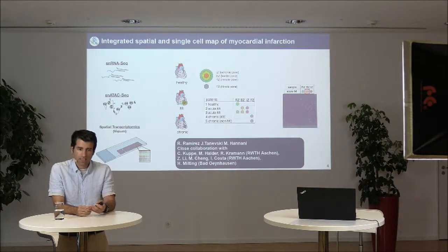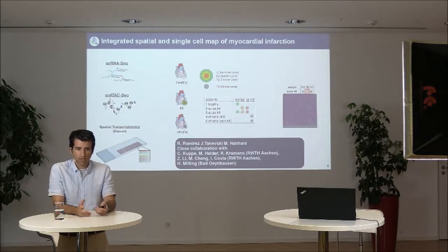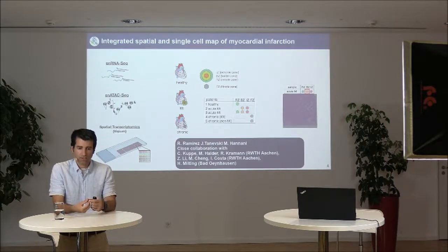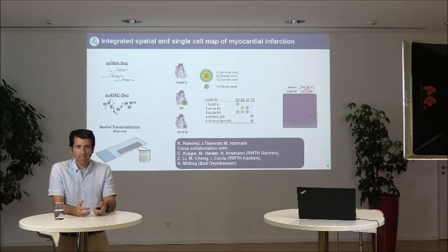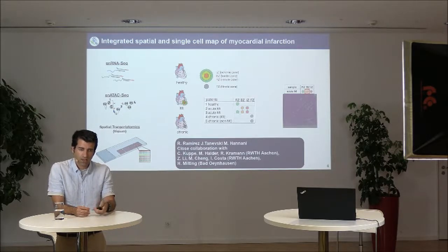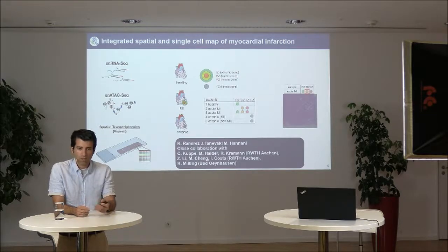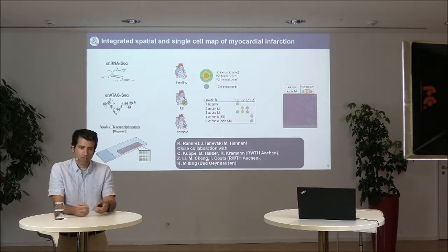The lab of Ivan Costa, also in Athens, did part of the bioinformatics — especially the topological analysis — and Hendrik Milting's lab provided the samples. We have samples from different patients as well as controls, with different slices or cross-sections of the heart showing different zones: the ischemic zone where ischemia has taken place, the remote zone which is healthy-like, and the intermediate border zone. We complement this with patients who had chronic disease rather than acute myocardial infarction.